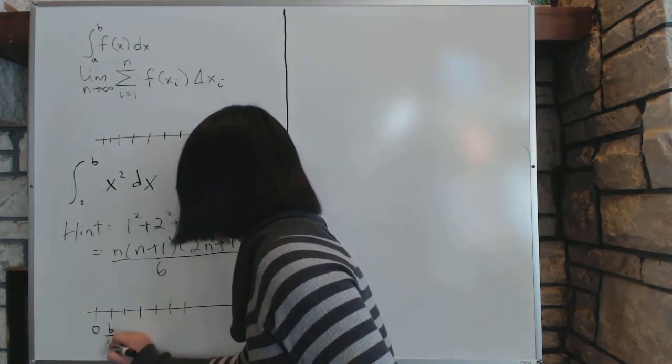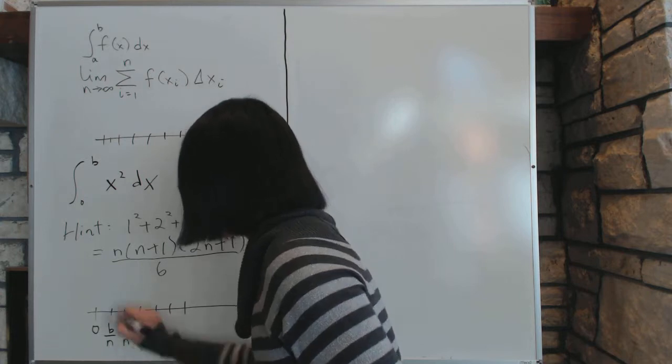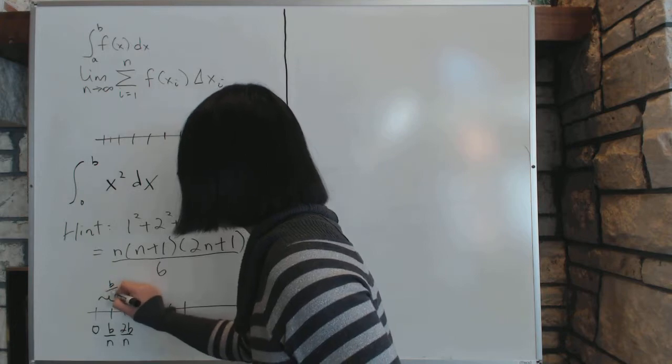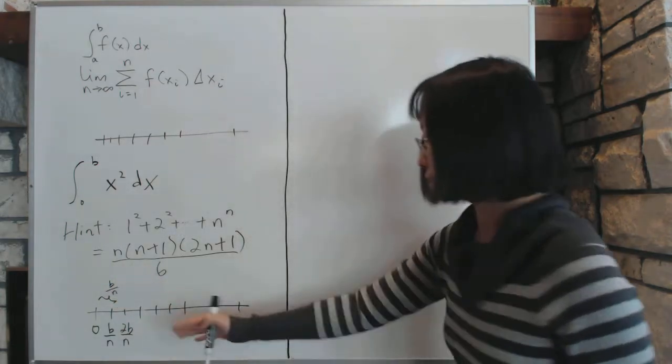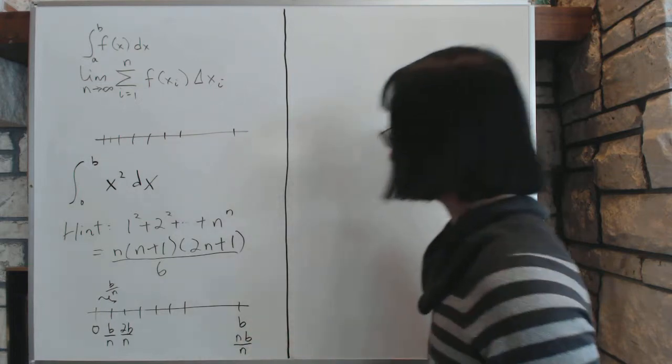So the first point is b over n. The second point is 2b over n. And so on. And of course, the width of the interval is also b over n. So it keeps going until the very end, which is nb over n.